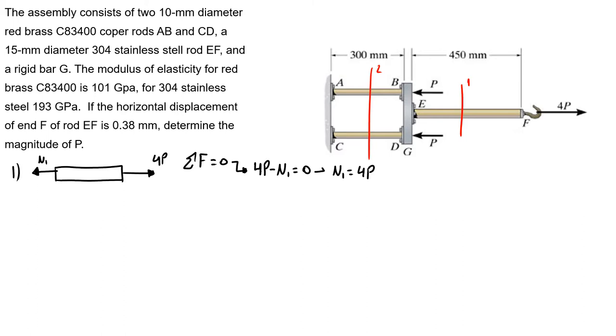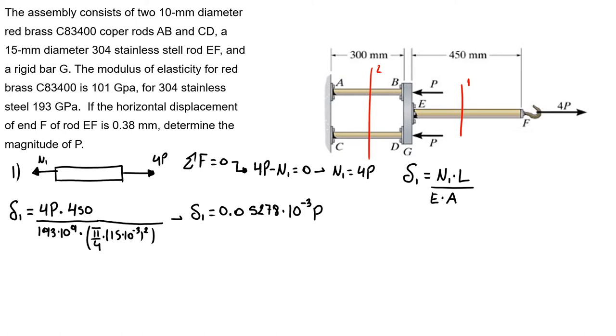Now we can find our displacement 1 equals N1 times original length over modulus of elasticity times area. So our displacement 1 equals 4P times the original length over 193 times 10 to the 9 Pascals times π over 4 times 15 times 10 to the minus 3 squared. Our first displacement equals 0.05278 times 10 to the minus 3 P.